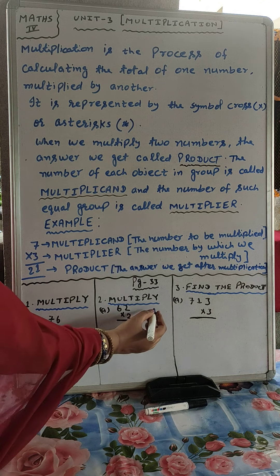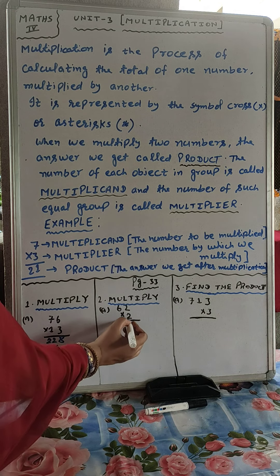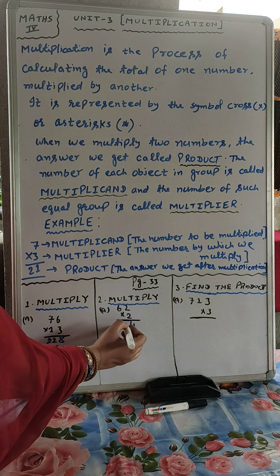Question number 2, multiply. 2×2 is 4. 6×2 is 12. That's 124.